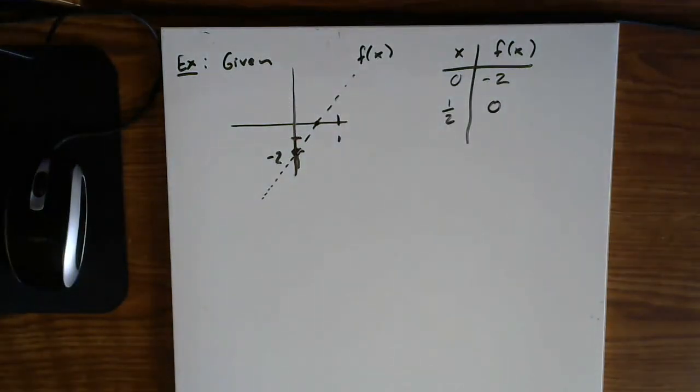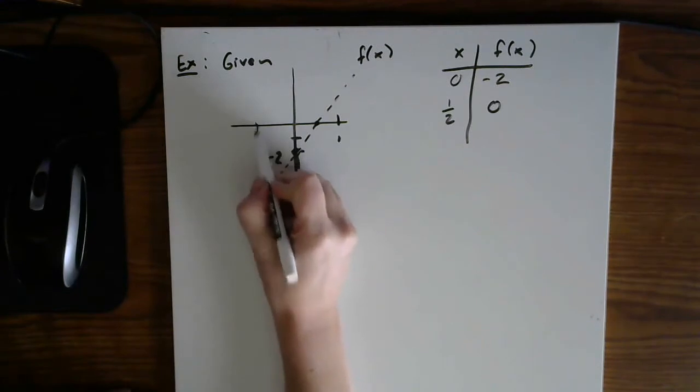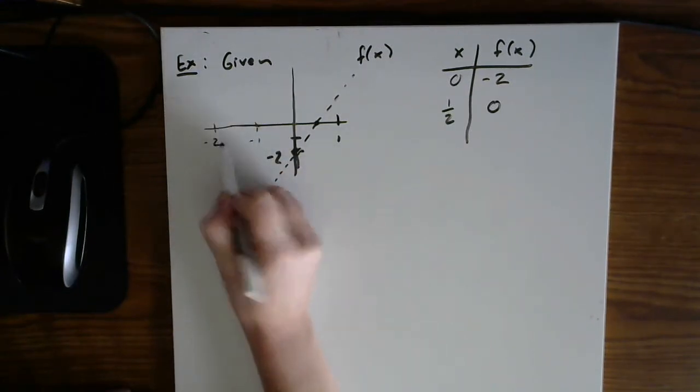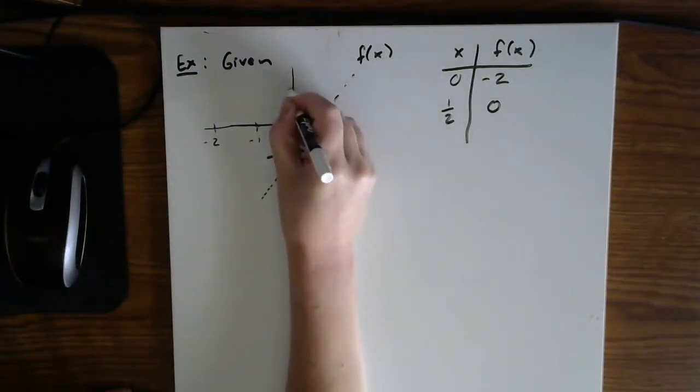But on this same graph, let's also include the inverse function. So let me add a few more details to the sketch here. Minus one, minus two, and then one, two.